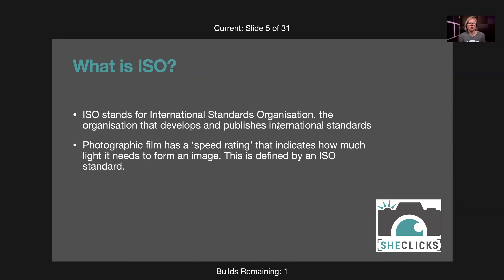Photographic film was given a speed rating — an ISO number, sometimes called an ASA number — which indicates how much light it needs to form an image. This was really important: if you have a roll of film, take a shot, then put another roll in with exactly the same settings, you'd expect the same image — but it depends on the sensitivity of the film. By standardizing how sensitive the film is, we were able to understand how to use shutter speed and aperture when using a particular type of film.